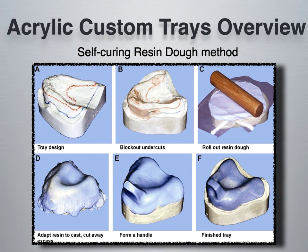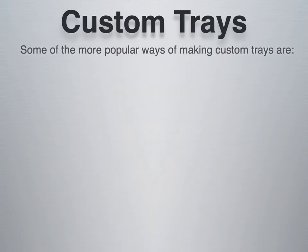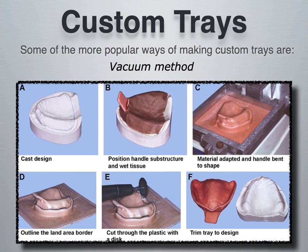A more popular way of making custom trays is the vacuum method, which gives you a uniform thickness throughout without needing to form the tray yourself. You design the cast, position a handle substructure using wet tissue, adapt the material on the vacuum form machine as discussed, and once it's adapted it gets cut away with a disc, trimmed, and polished. You end up with a tray that's already formed nicely to the model with small spacing from the wet tissue paper.